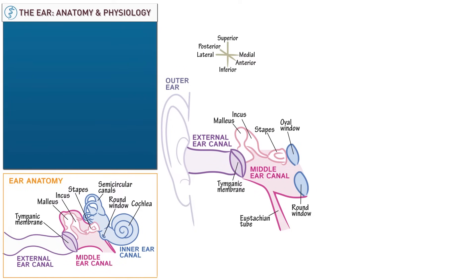Two important muscles exist within the middle ear canal: the tensor tympani, which is innervated by the trigeminal nerve and acts on the tympanic membrane, and the stapedius muscle, which is innervated by the facial nerve and acts on the stapes. Auditory abnormalities and Bell's palsy are often ascribed to stapedius muscle inactivity.